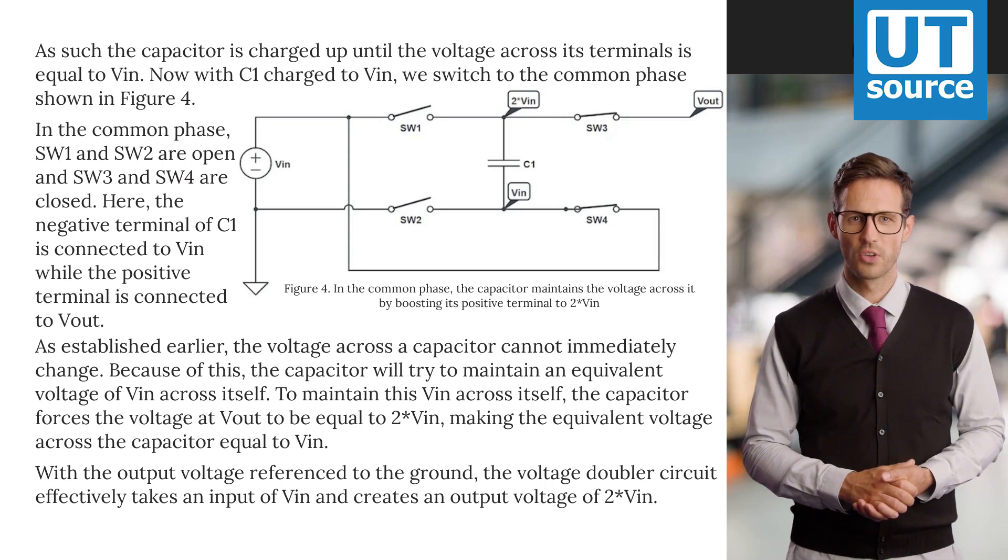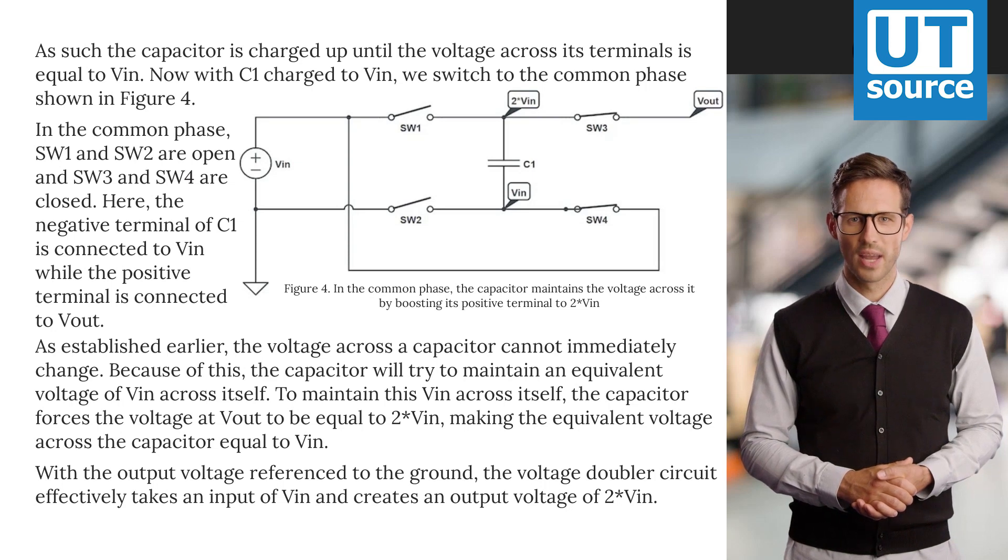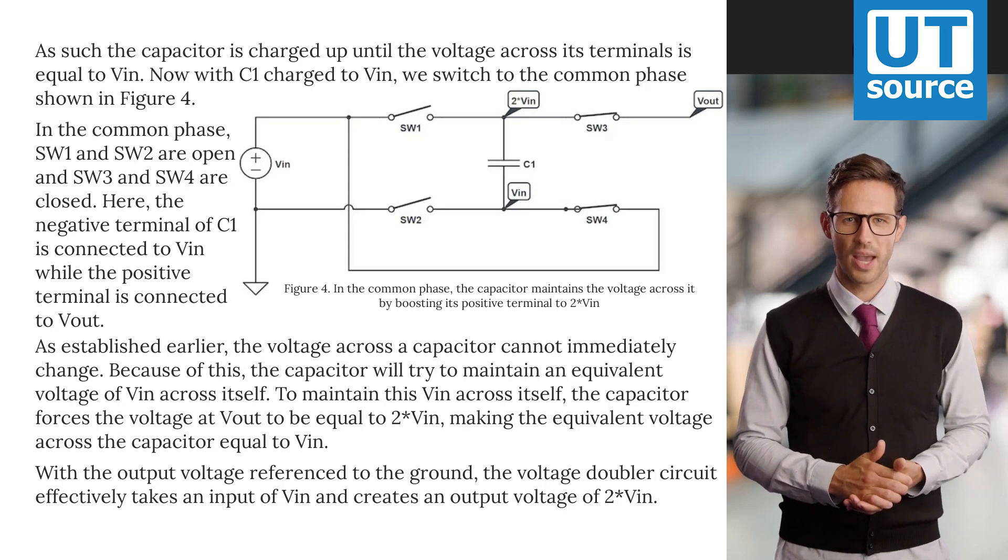With the output voltage referenced to the ground, the voltage doubler circuit effectively takes an input of VIN and creates an output voltage of 2*VIN.